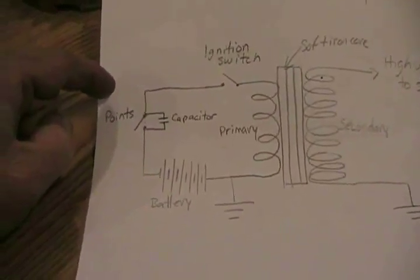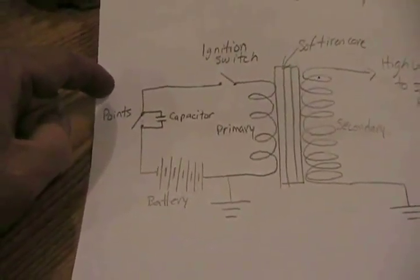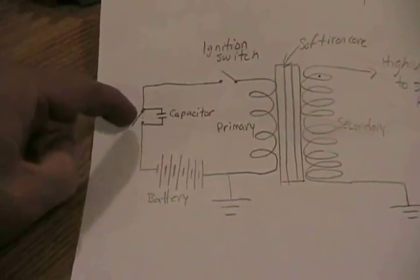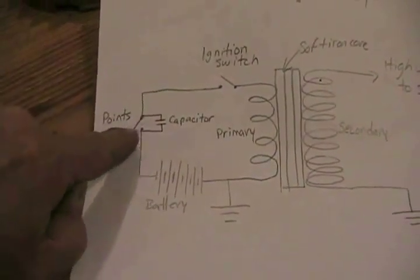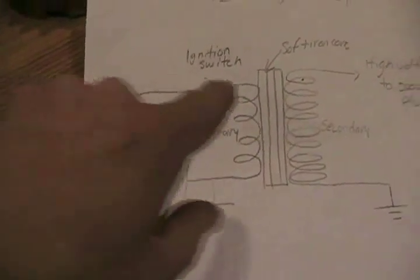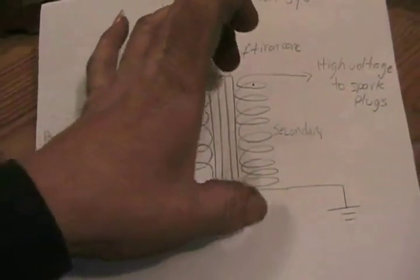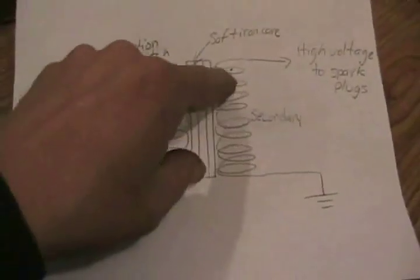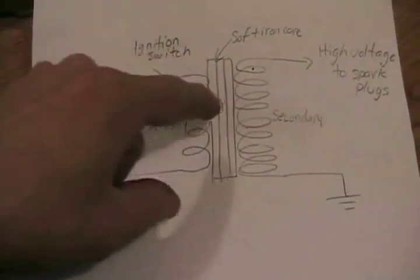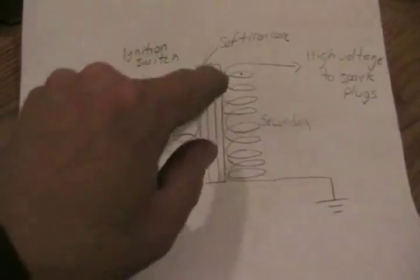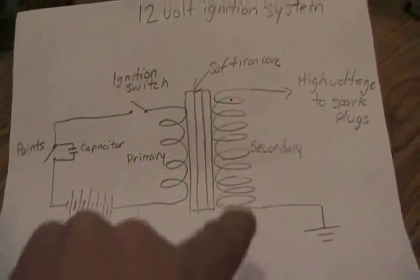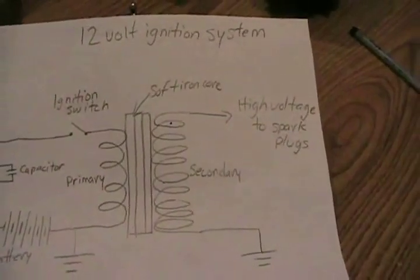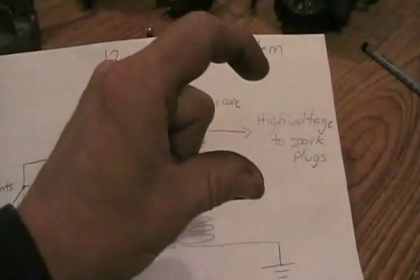And then some place in the distributor, or the mechanical mechanism that's in the engine that moves around, something hits these points, opens them up. Then, of course, a spark would want to jump across the gap of the switch, but the capacitor absorbs that. So what happens is the magnetic flux lines collapse, and when they collapse, they move electrons through here, which the capacitor absorbs. And they also move electrons through this much larger coil of thinner wire. And since we have many more coils there, we get a much higher voltage coming out. Like, for example, on a modern car, 30,000, 40,000 volts where the spark jumps that far.